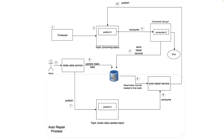It might be updating via some UI or some backend services — they generally don't directly update the database. So to be more practical: the static data admin has a UI, makes an update, and calls some API. As soon as this static data service updates the data in the database successfully, we are going to publish an event or a record to a static data update topic indicating which particular static data was updated.